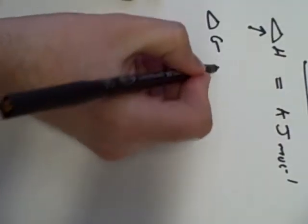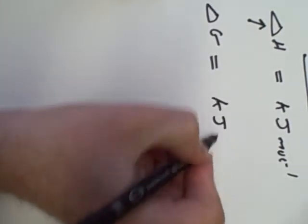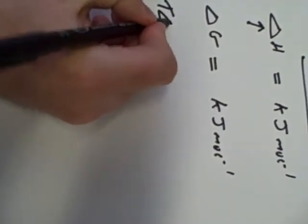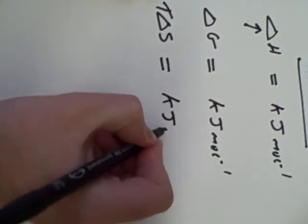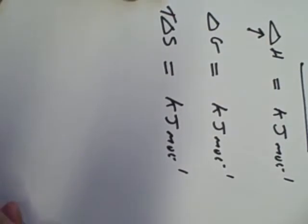If we've got molar quantities: delta G, also kilojoules per mole; T delta S, also kilojoules per mole.